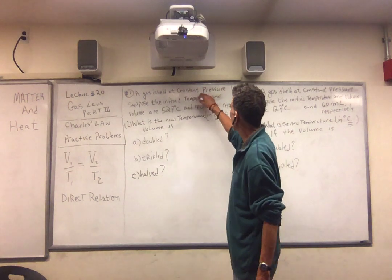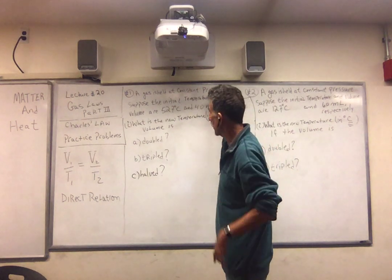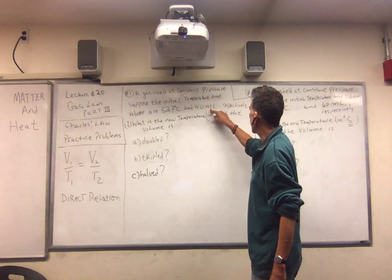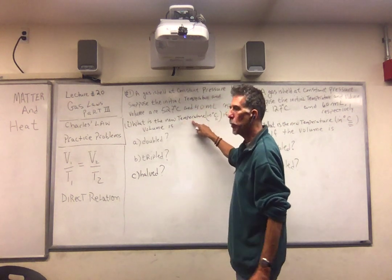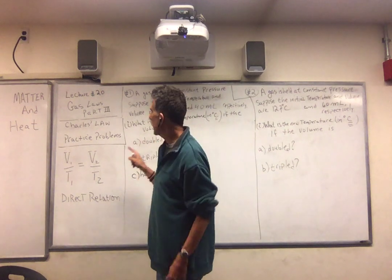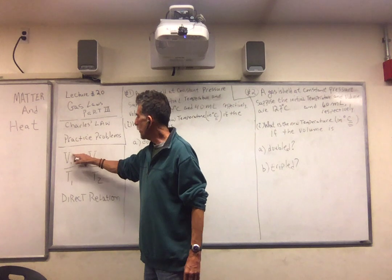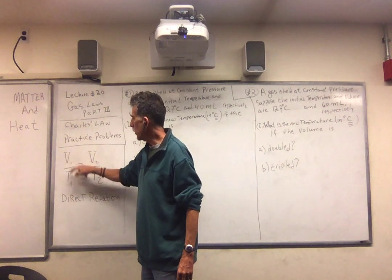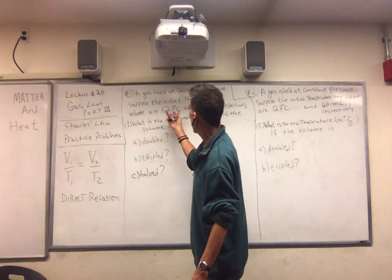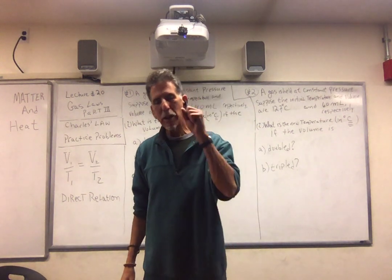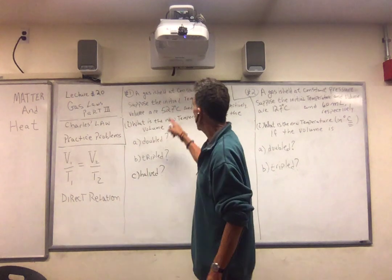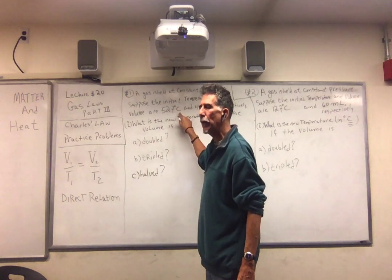Let's look at this first problem. A gas is held at constant pressure — Charles can't take the pressure. Suppose the initial temperature and volume are 527 degrees Celsius and 40 milliliters respectively. I want to know the new temperature in degrees Celsius if the volume is doubled. Now, you just told us it's a direct relationship, V over T — they have to change the same. So if I double the volume, the temperature changes. But remember: all calculations must be done in Kelvin. So we need to convert 527 degrees Celsius into Kelvin.